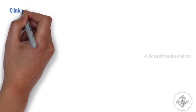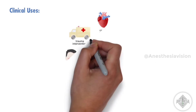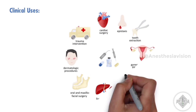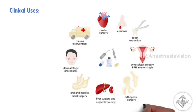Next, we'll look at its clinical uses. Tranexamic acid is widely employed in clinical practice, including controlling bleeding during surgeries such as cardiac, orthopedic, and trauma surgeries.